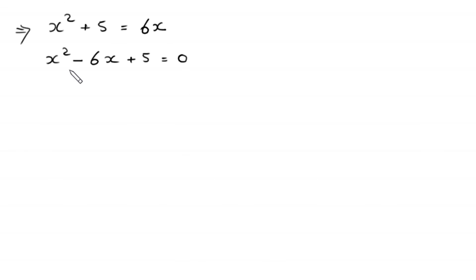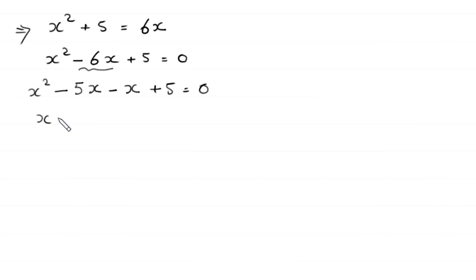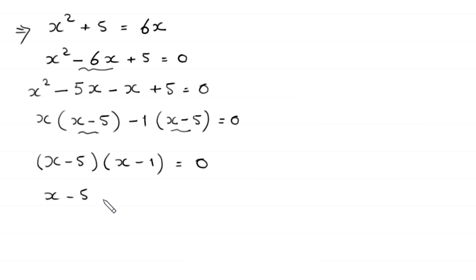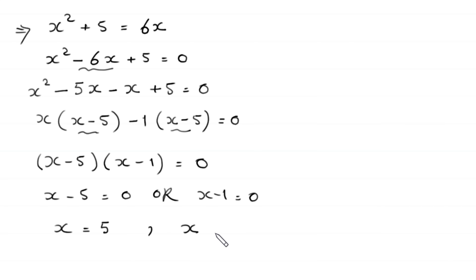This quadratic equation is factorable. We split negative 6x as negative 5x minus x, giving x squared minus 5x minus x plus 5 equals 0. Factoring out x from the first two terms and negative 1 from the last two terms gives x minus 5 as a common factor, so x minus 5 times x minus 1 equals 0. Therefore x equals 5 or x equals 1. These are the first and second values of x.